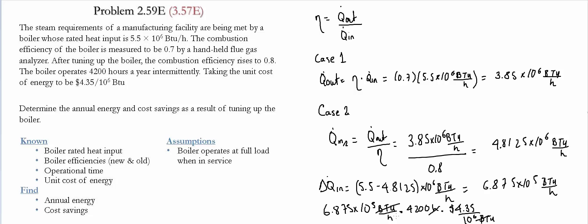Then we can cancel BTUs and BTUs, hours and hours. And the final value tells us that by doing this tuning, we're going to save $12,589.50 per year.